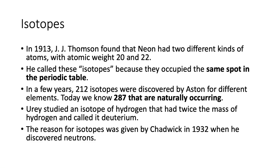Finally, in 1932, Chadwick clarifies what isotopes are because Chadwick discovered neutrons — particles within atoms. Essentially what's happening in these isotopes is that atoms are made of a nucleus that contains heavy particles, and around this nucleus there are lighter particles that rotate around it. These lighter particles are called electrons.